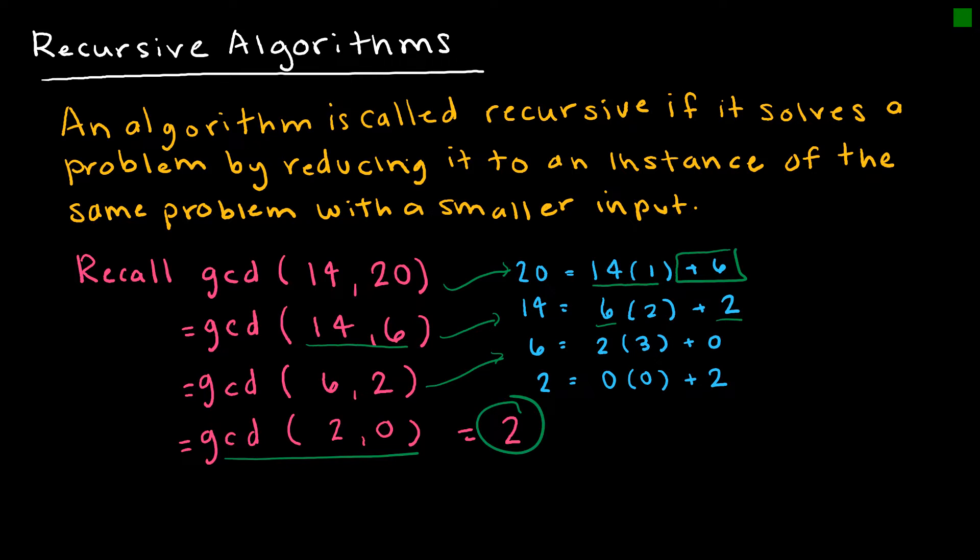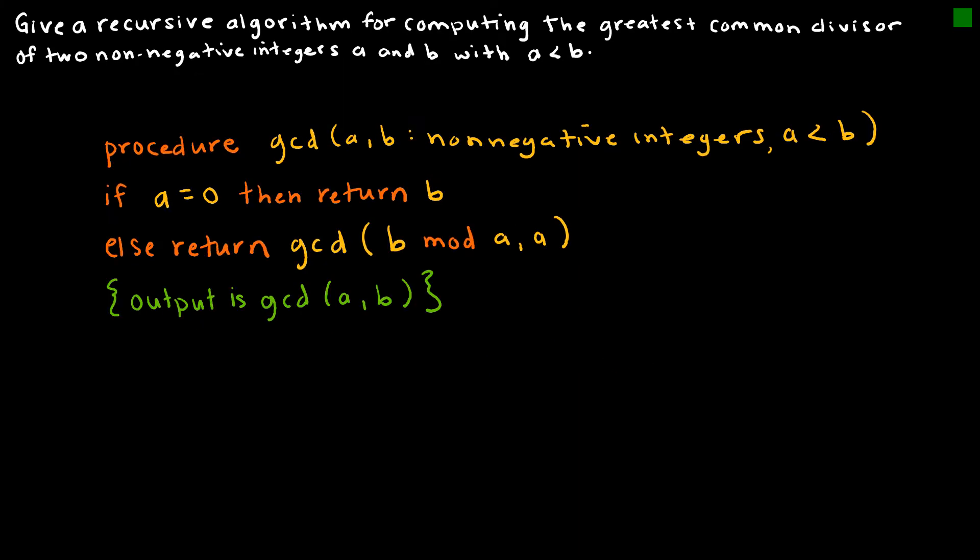So we're going to look at the actual pseudocode for that in just a moment, but this is essentially the way a recursive algorithm works. So here's the pseudocode for that. And again, this is for finding the greatest common divisor of two non-negative integers, A and B, with A less than B.